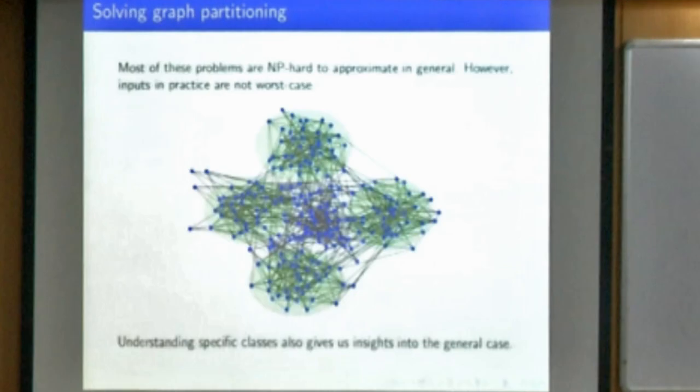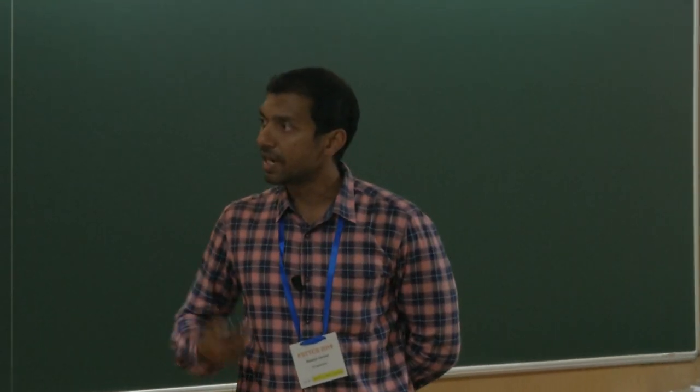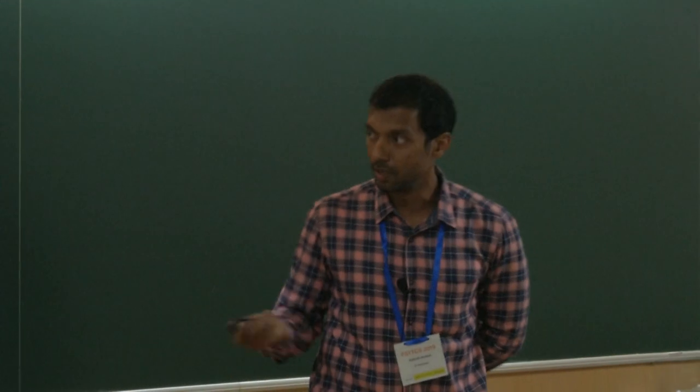Most of the objectives defined in the previous slide are actually NP-hard to compute exactly. So we are looking for approximations, and in fact even when we talk about approximations, most of the instances that happen in real life are not really the worst case instances for these problems. For instance, in this graph you can see that there is some kind of a partitioning already that is implicit, and this is the kind of inputs that we want to look at in this particular result.